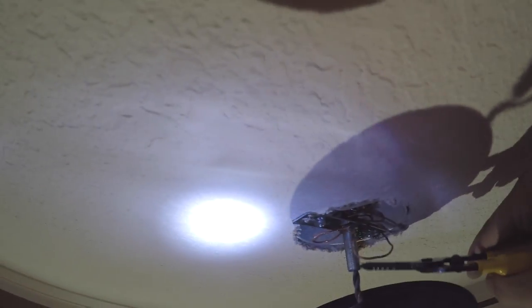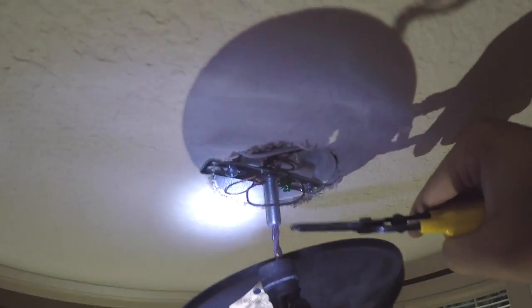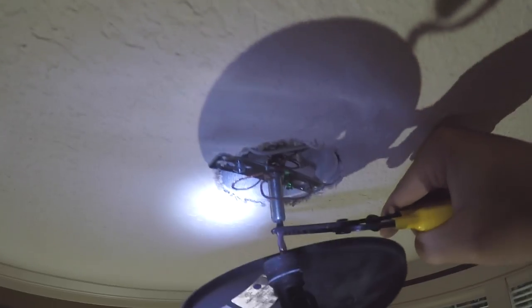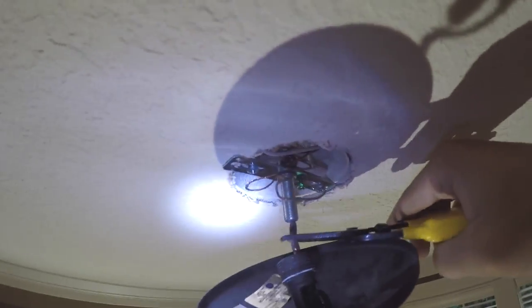This is how it looks after we screw off the lamp from the mounting bracket. As you can see, currently the weight of the lamp is held by the electrical wire.